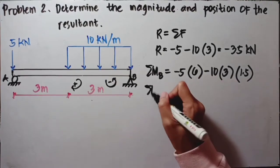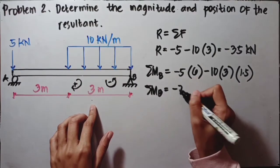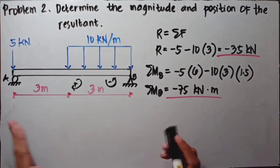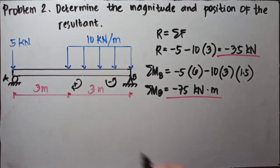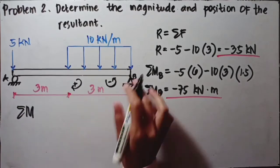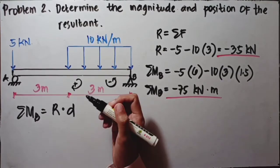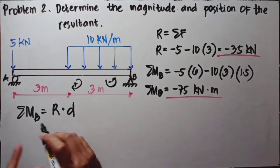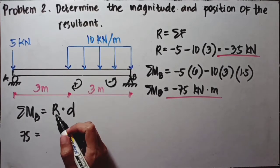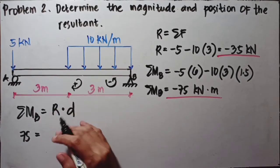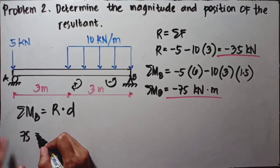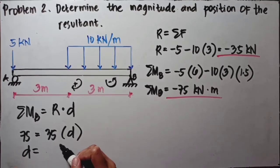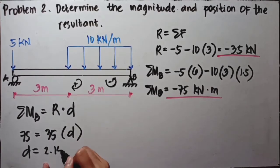Adding these together, the summation of moments at B equals negative 75 kilonewton-meters. The last step is locating the position of the resultant on the beam. Using the formula summation moment at B equals R times its moment arm, we substitute: 75 equals 35 times D — we drop the negatives since we're solving for a distance. Calculating this, D equals 2.14 meters.